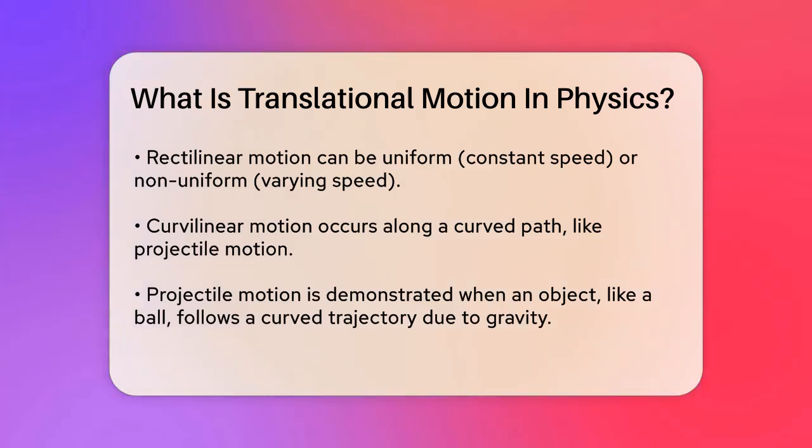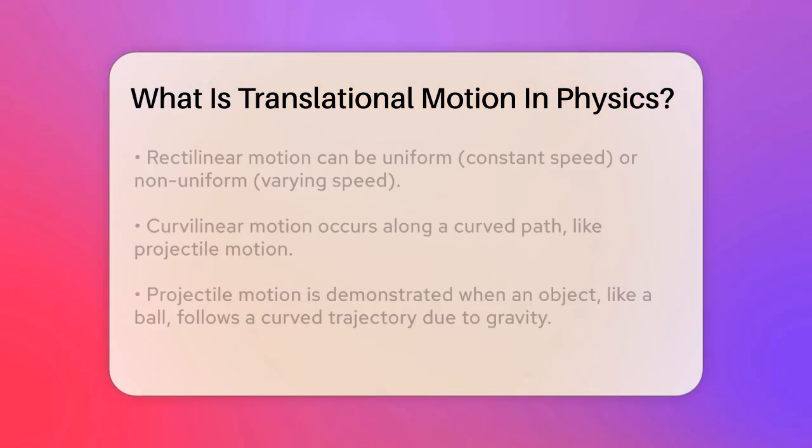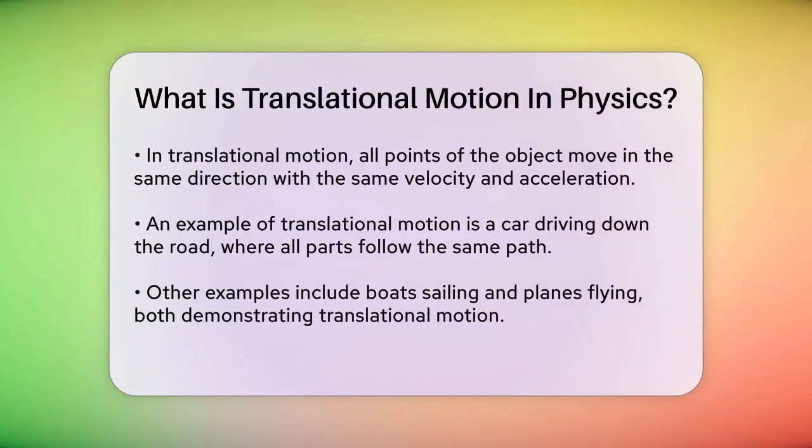In translational motion, all points of the object move in the same direction and have the same velocity and acceleration at any given time. This means that if you paint an arrow on the object, the arrow will continue pointing in the same direction as the object moves. To understand this better, consider a car driving down the road. The car moves from one point to another without rotating, and all parts of the car follow the same path.